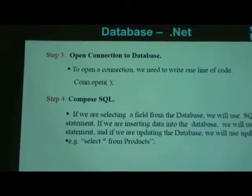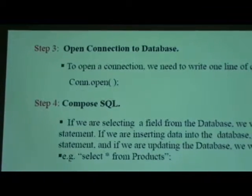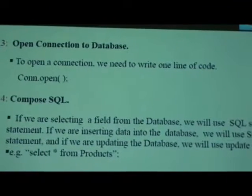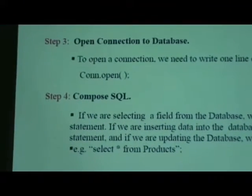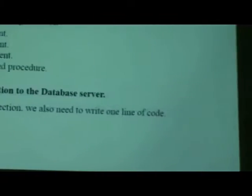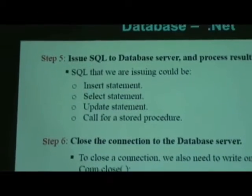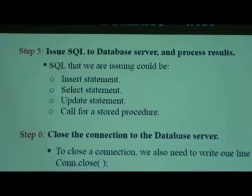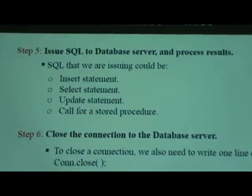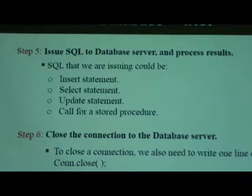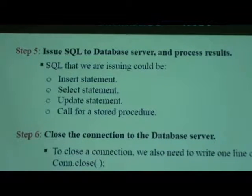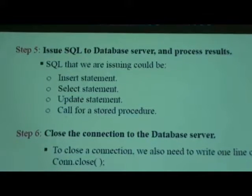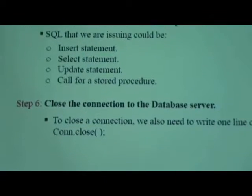Step three: we need to open the connection to the database, and usually this is only one line of code. Then we need to compose SQL, like a select statement or update statement. We need to issue SQL and process results, because the data I will retrieve from the database will be on an object. We have to process the data — for example, if I am retrieving a price, we have to cast the data from the object. If it's double, so double.